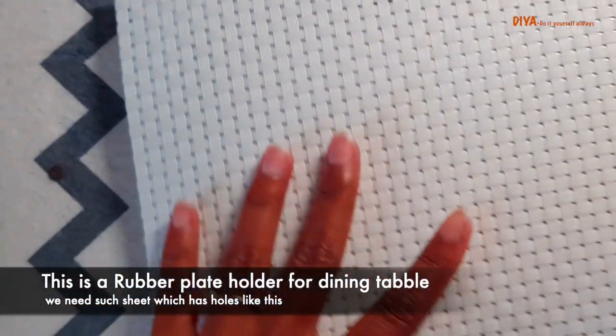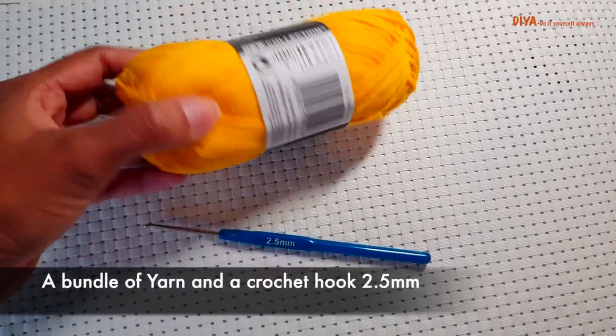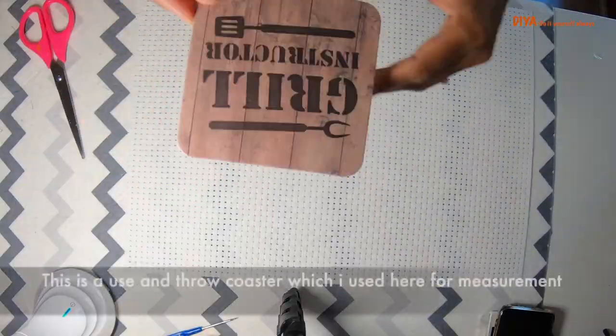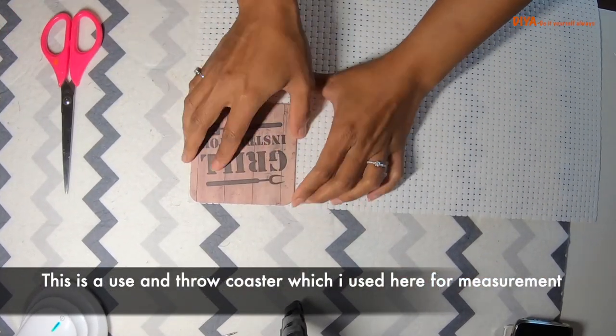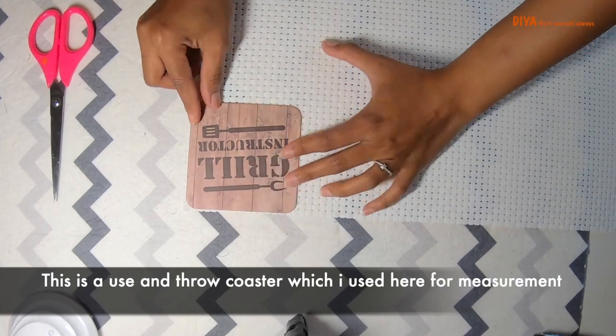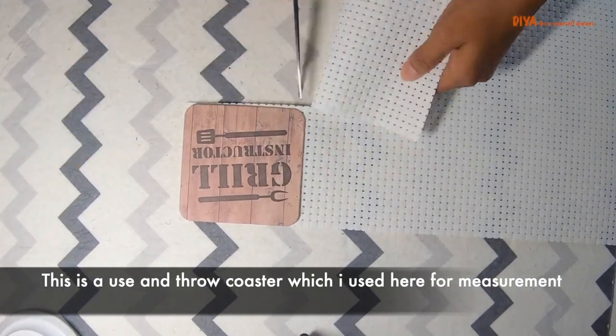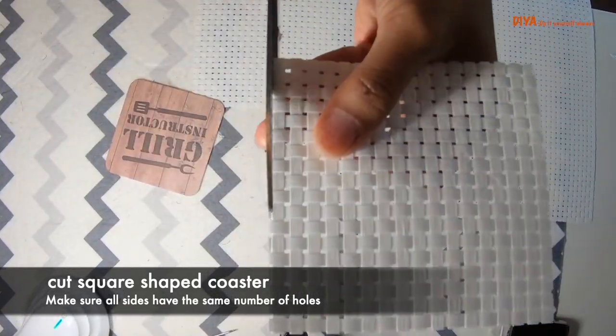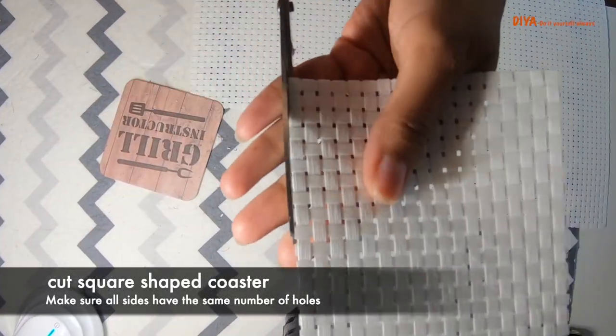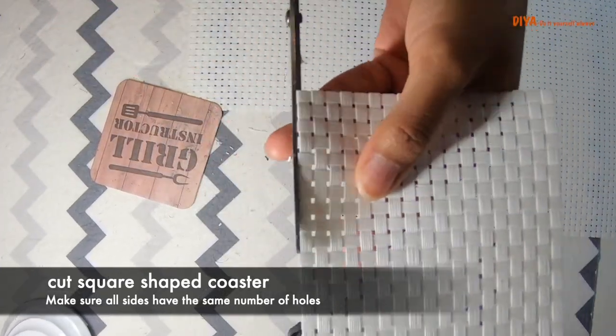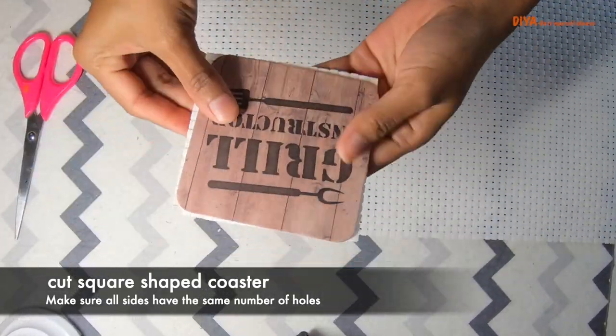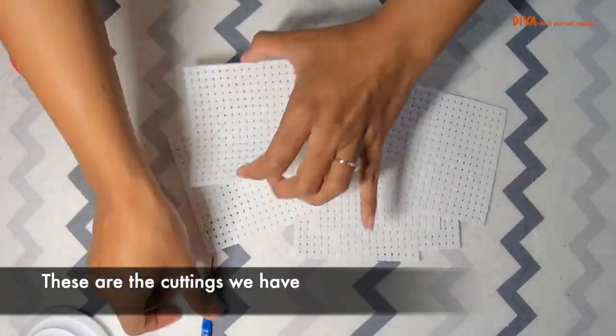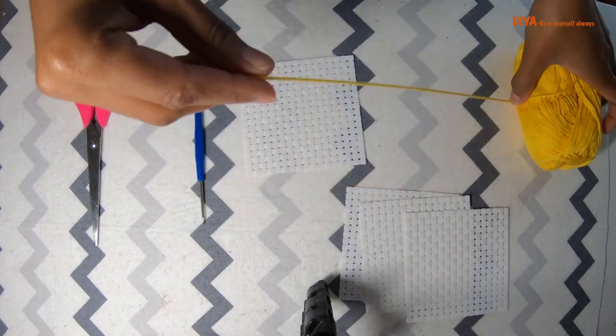Other than this you need yarn, a crochet hook, and scissors. The coaster which I'm using here is a use and throw coaster that I had for measurement. We need to cut a square shape coaster, and one thing we need to be sure about is the number of holes each side are the same. So these are the cuttings that we have. Let's get into the process.